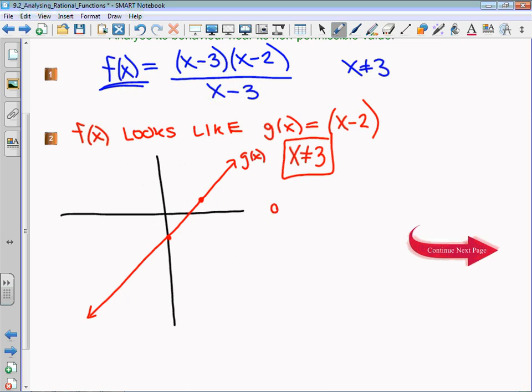On g(x), if I took the function g and evaluated at three, I would get g(3) = 3-2 = 1. That means the point (3,1) exists on g(x). Remember x can't be equal to three - if we look at the graph of g(x) without that restriction, (3,1) would exist there.